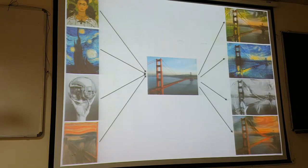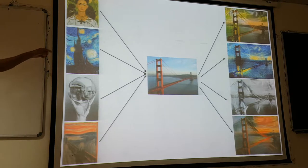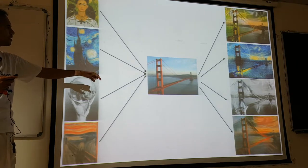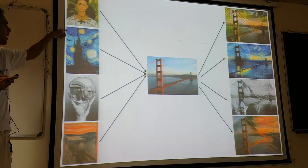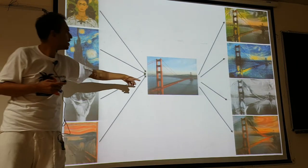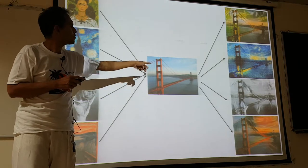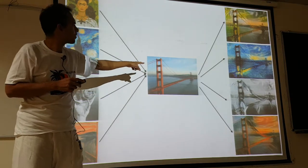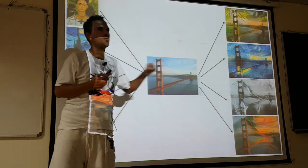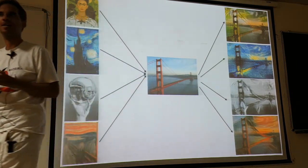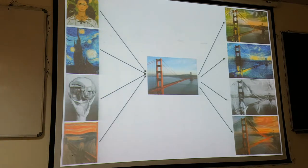You may have seen neural style transfer: you train an algorithm to learn the style of an artist, and you can then recreate an image from a source image, redrawn using that style. That's called neural style.